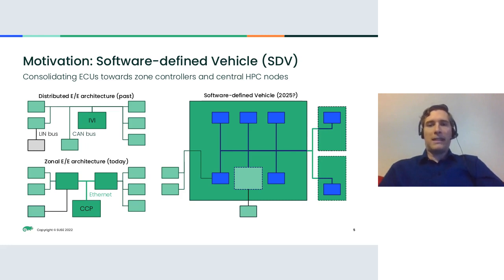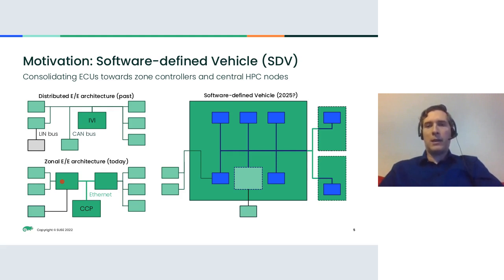Today, when talking about the partnership with Electrobit, the role of Linux is expanding further. There is a central compute platform and zone controllers or domain controllers for particular parts of the car that perform edge processing or channel data back and forth. This has also changed the physical technologies used — variations of Ethernet, not necessarily RJ45 cables but two-wire and similar.